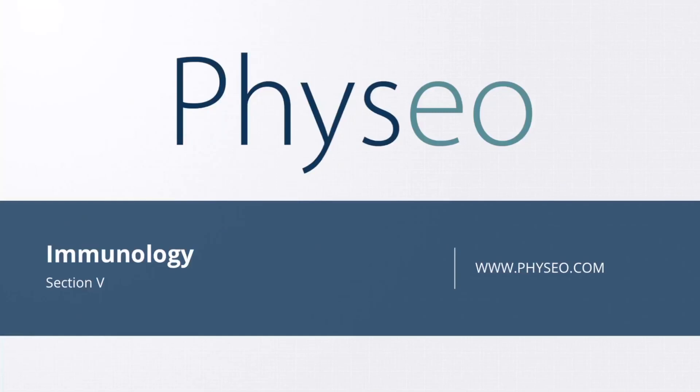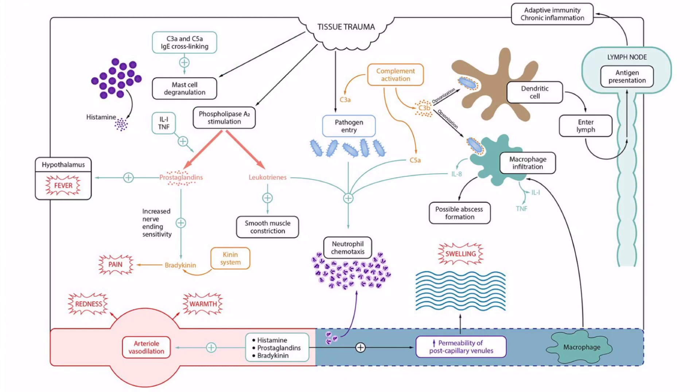Welcome to section 5 of immunology. In this section, we'll be discussing the complement system. This is the overview image for acute inflammation. We introduced complement activation briefly in section 2, and so now we're going to zoom in on this process and tell you what you need to know for Step 1.